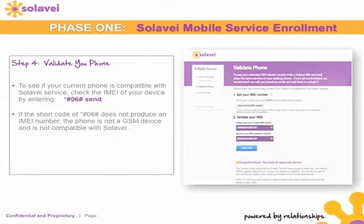Step four is to validate your phone. To see if your current phone is compatible with Solovey service, check the IMEI of your device by entering *#06# and pressing Send. If that short code does not produce an IMEI number, the phone is not a GSM device and is not compatible with Solovey.